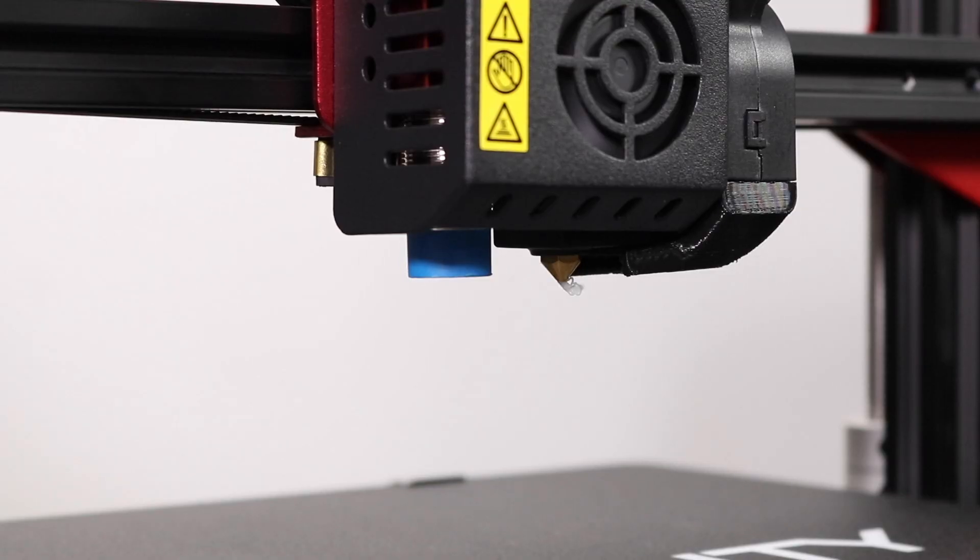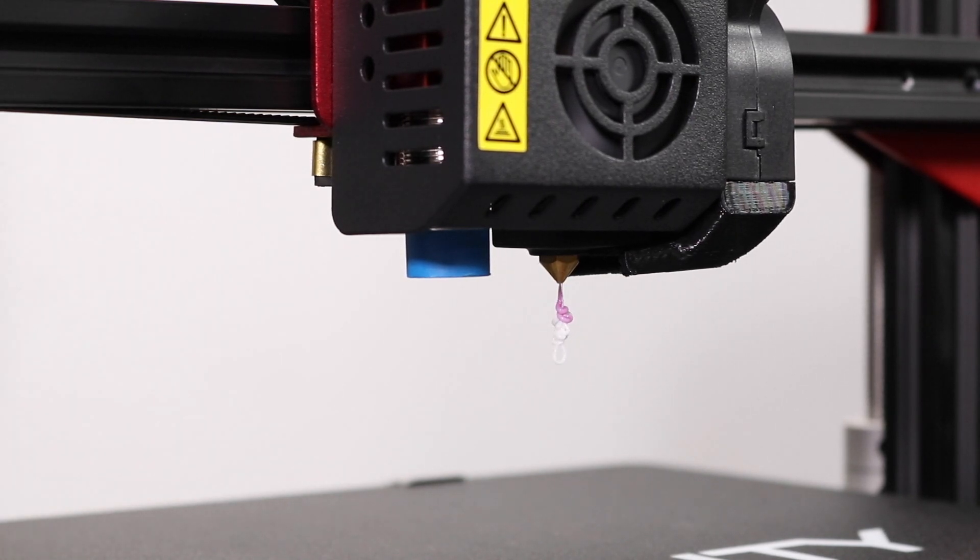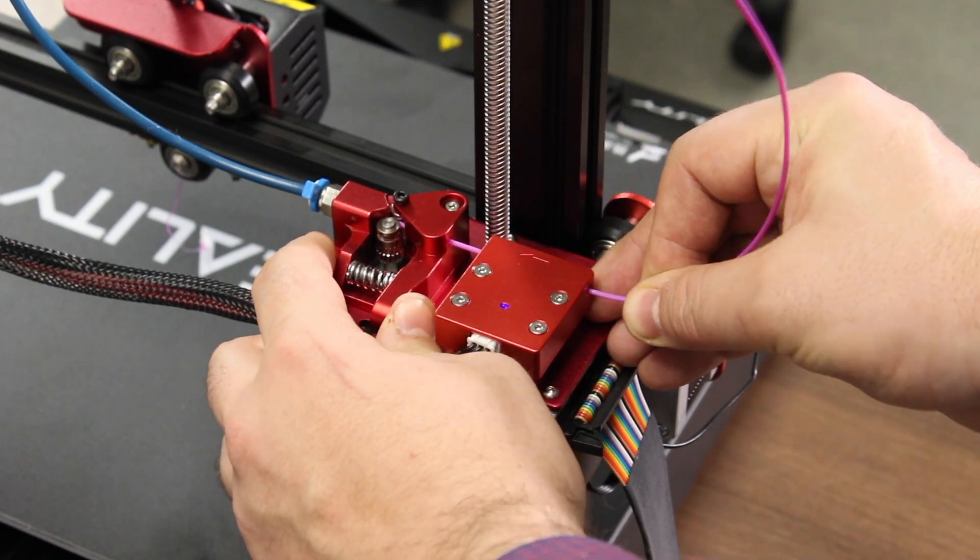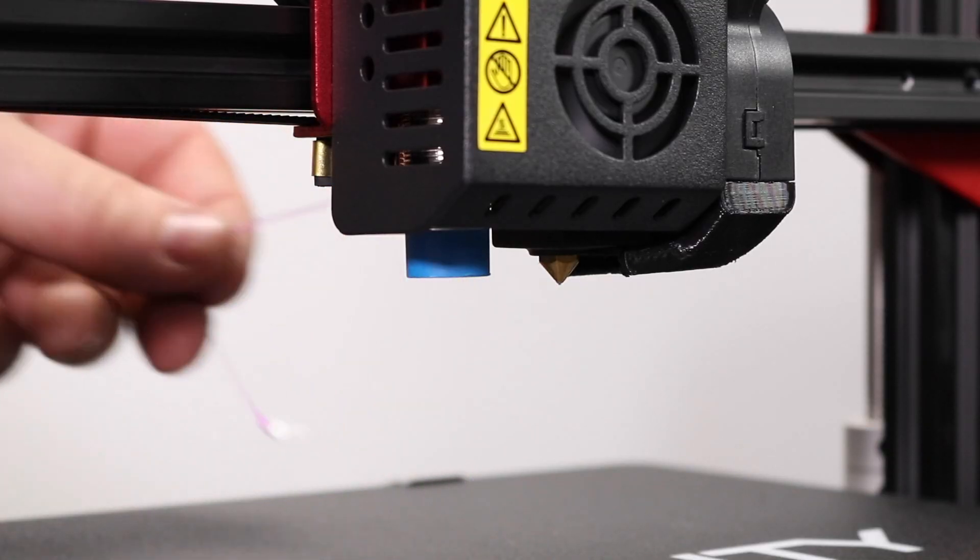At that point, you should start seeing filament come out of the nozzle. To make sure the filament doesn't leak everywhere, you can take some of the pressure off by pressing on the extruder arm and then pulling on the filament by about 2mm or so. Remove the excess filament.